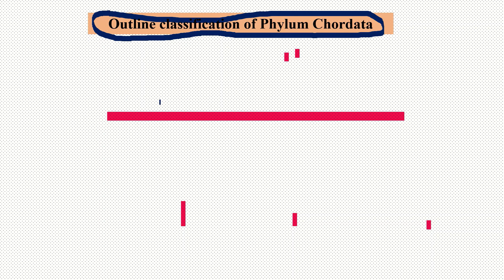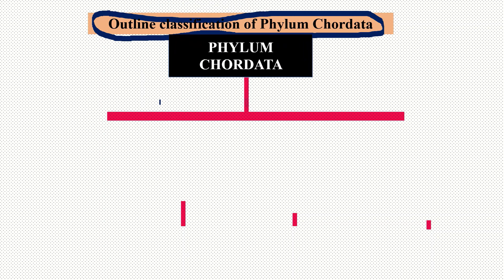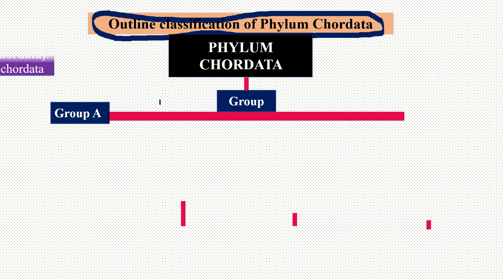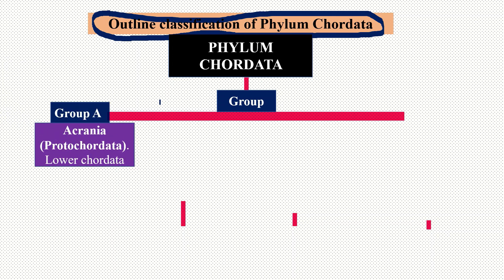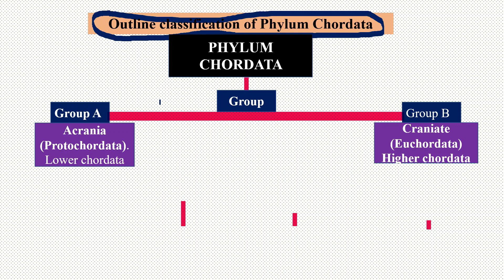Phylum chordata is divisible into two groups: Group A and Group B. Group A is called Acrania, which is also called Protochordata or lower chordata. Group B is called Craniata, which is also called Eochordata or higher chordata.